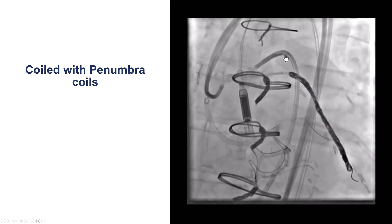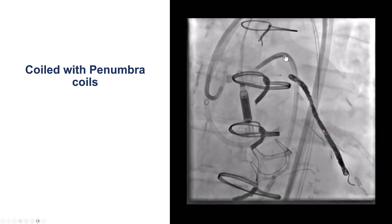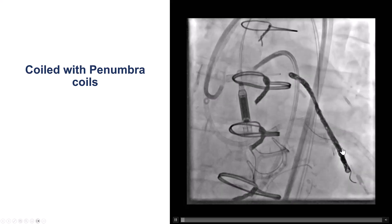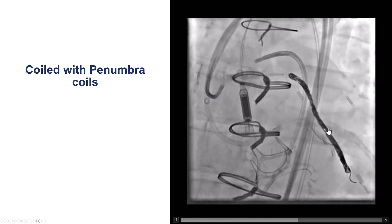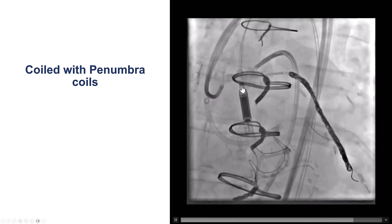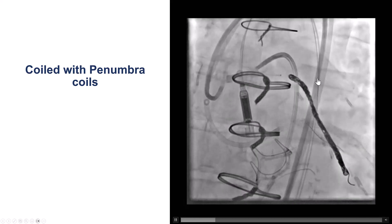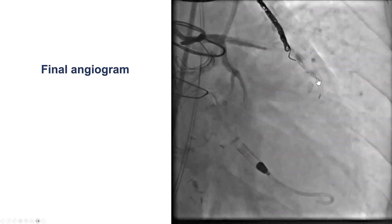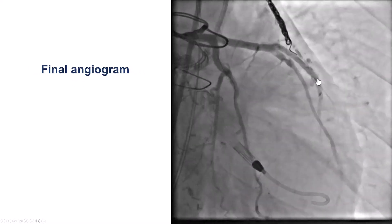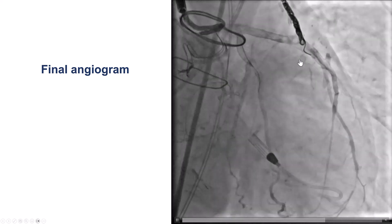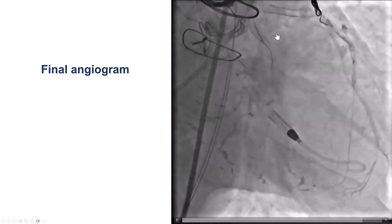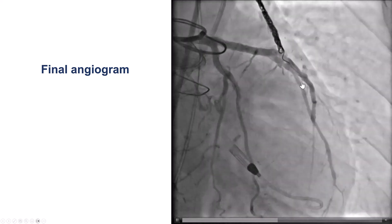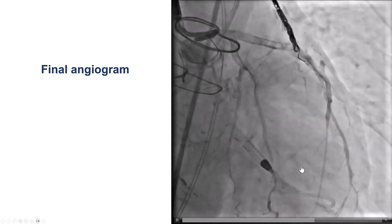We placed several Penumbra coils — a POD coil distally and then a packing coil more proximally — which successfully occluded the vessel. This was the final result: we no longer have any competitive flow, and we see excellent filling of the LAD as well as the diagonal branch.